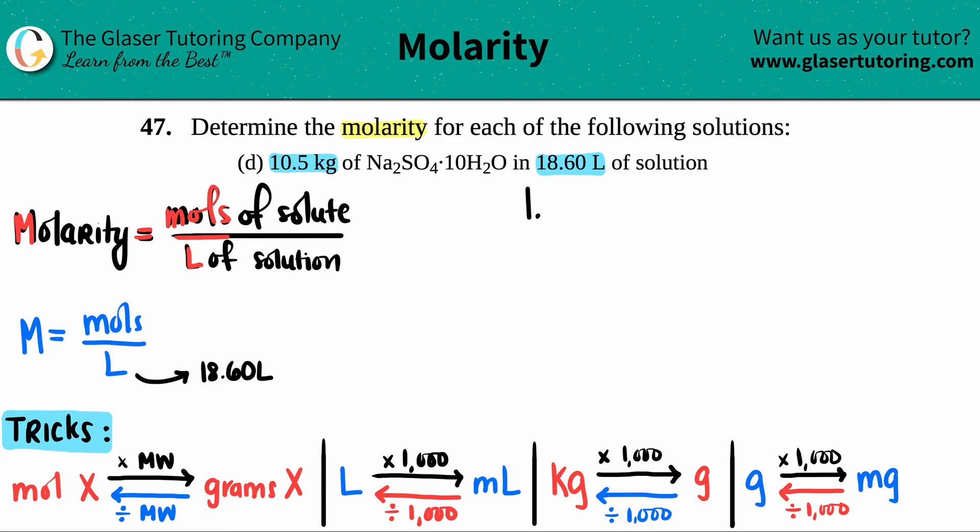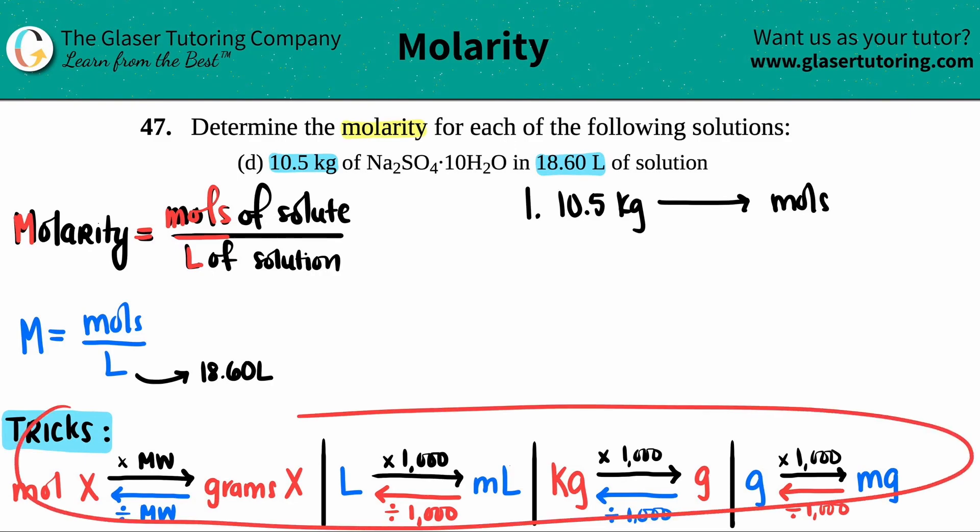Now there's a couple of things - the tricks down here will lead us. We know that kilogram is part of the SI units. Kilo is a prefix and gram is one of the SI units for mass. The first thing I have to do is convert the kilogram into grams.